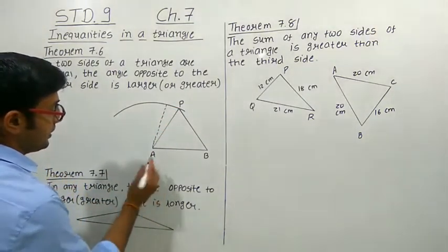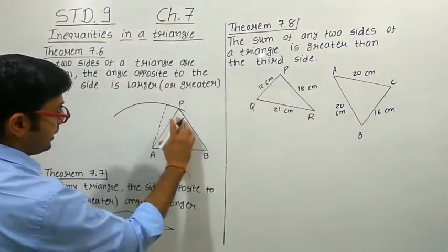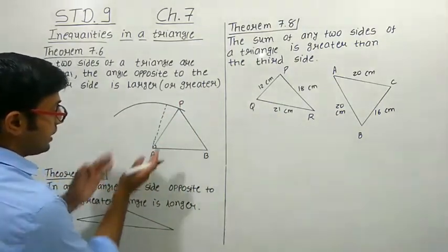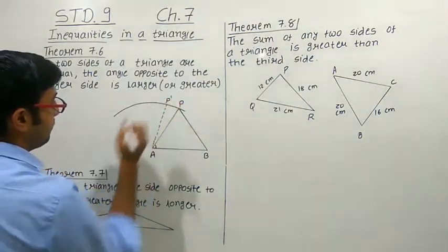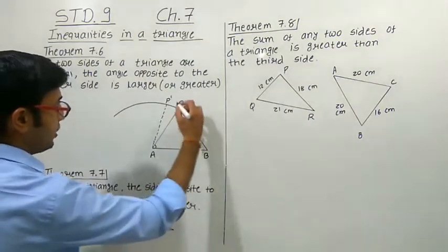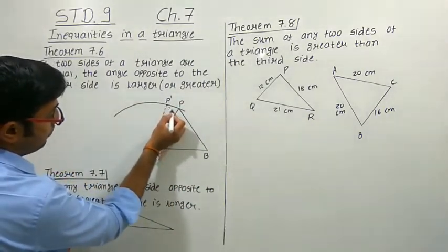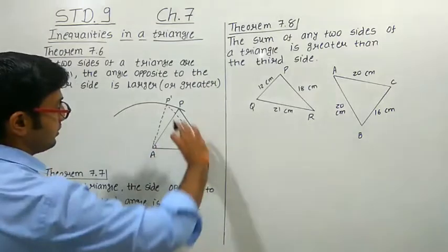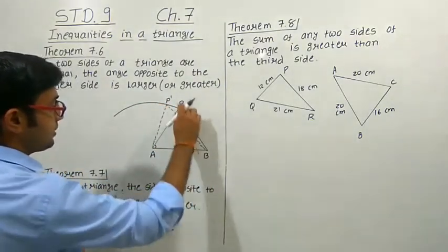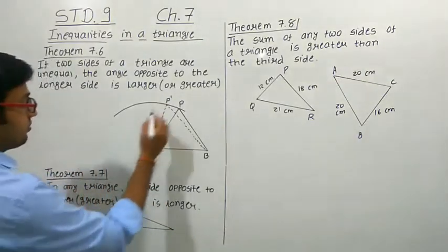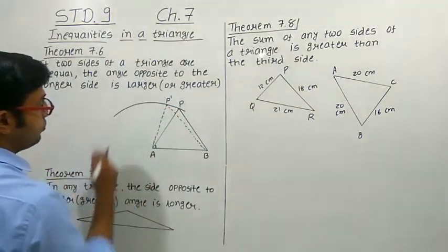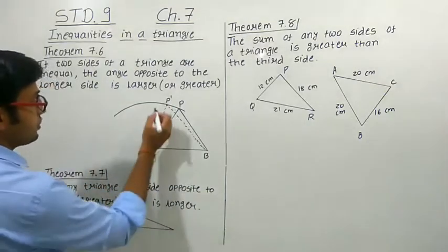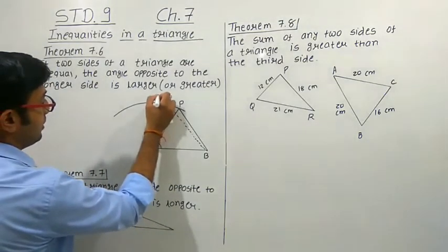As we move point P to a new position P-dash, and join P-dash to B, we can see that the length P-dash B has increased compared to PB. Moving further to P-double-dash, the PB side increases again. The angle at A is also getting increased as we move the point.